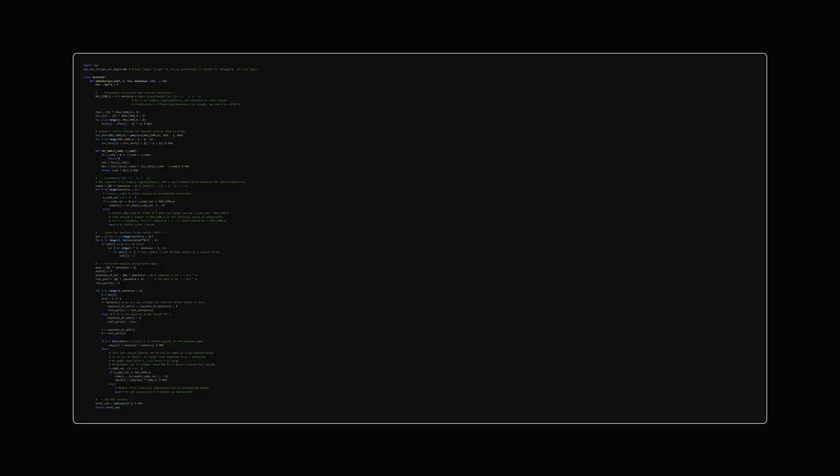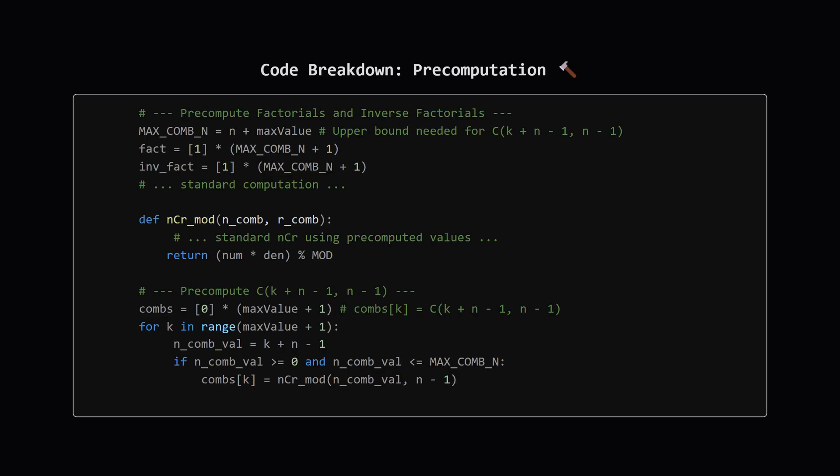Alright, here's the Python code implementing that sieve approach. It looks a bit dense at first glance, maybe, but don't worry, we'll walk through the key parts. It follows the logic we just discussed. First up, the boring but necessary stuff: pre-computation. To calculate combinations n choose r modulo MOD quickly, we pre-compute factorials and their modular inverses up to the maximum value needed. The maximum in our nCr will be around K+n-1, where K is at most log(maxValue). We calculate these nCr values for C(K+n-1, n-1) for the needed range of K exponents and store them in the combs array. This makes looking up ways(p^K) superfast later.